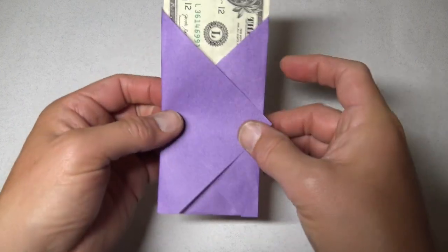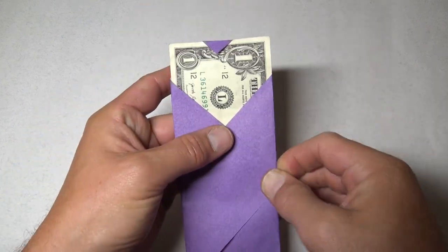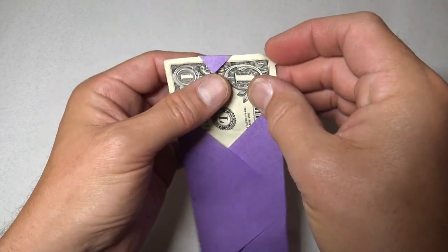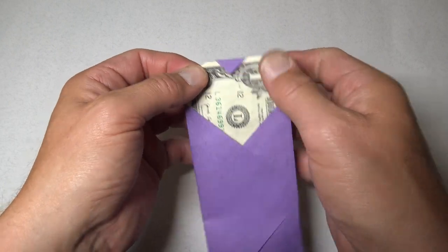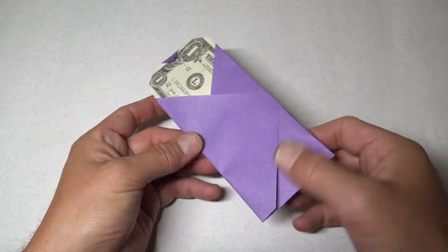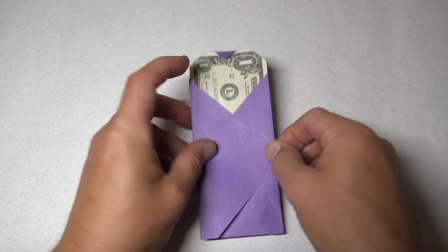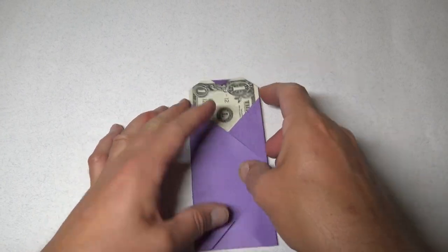And fold this flap over the edge. Now, even like this, we could just fold this flap over like this and then fold the corners in like this. And you have a nice heart and it's a nice envelope that holds together fairly well. So that's nice.